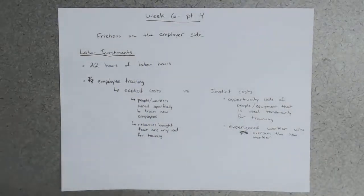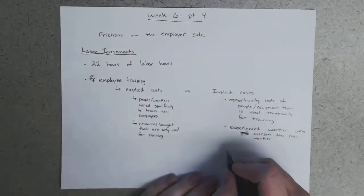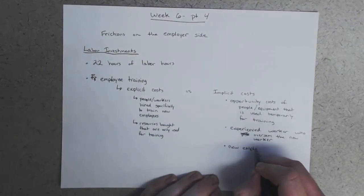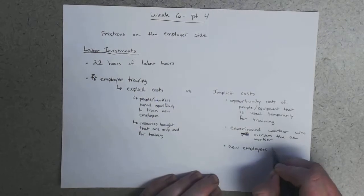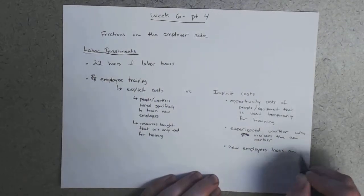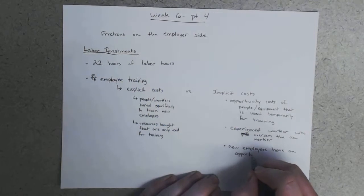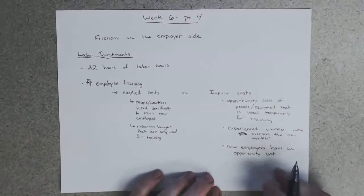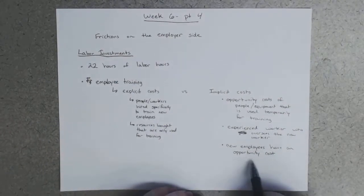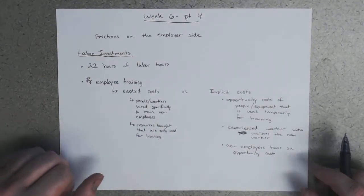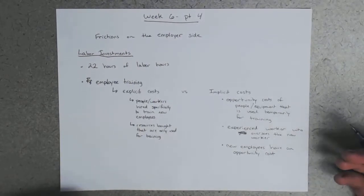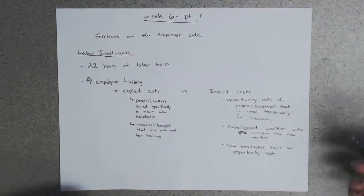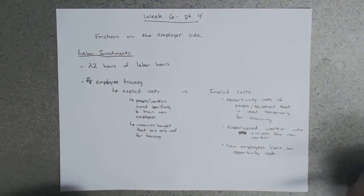But there's other implicit costs. We have even the new employees have an opportunity cost. Because presumably if they're sitting in training, so if they're sitting in a training seminar, they're not actually doing anything productive for the company. They're not actually producing anything. They're learning how to produce.